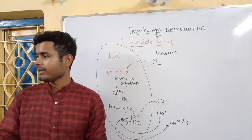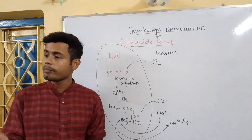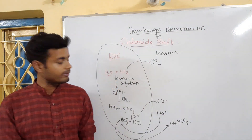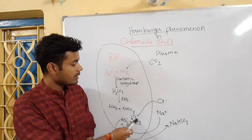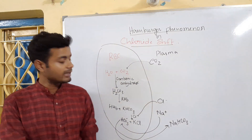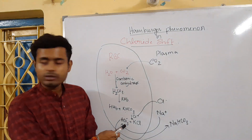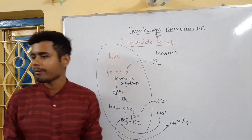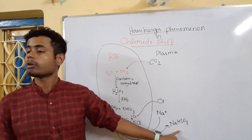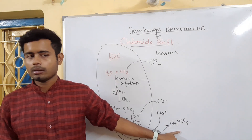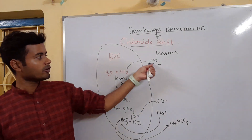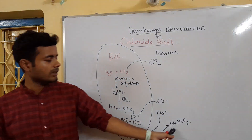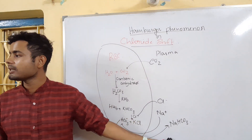Chlorine from plasma would be shifted to RBC — that is why it is known as chloride shift — and it helps to form potassium chloride (KCl) in the RBC. The HCO₃⁻, or bicarbonate ion, would go back to the plasma to fuse with sodium ion and form sodium bicarbonate (NaHCO₃). So, CO₂ is going towards RBC and sodium bicarbonate is formed in the plasma.